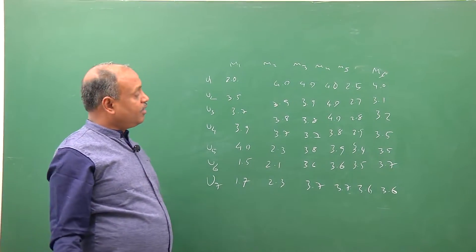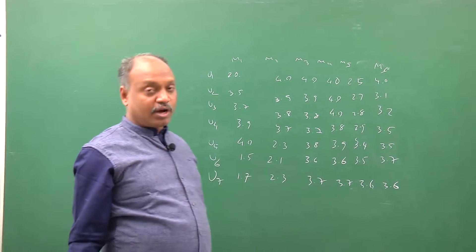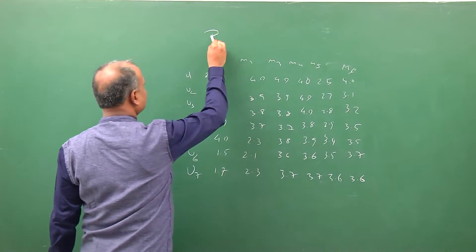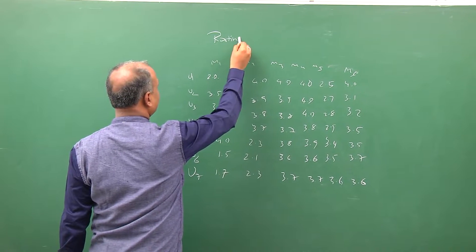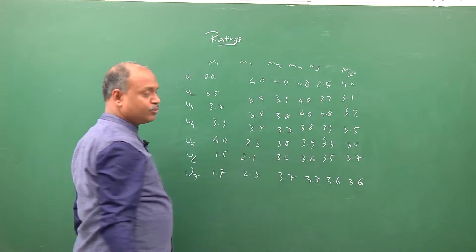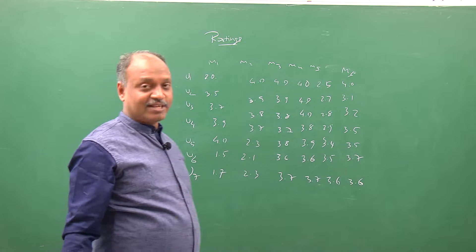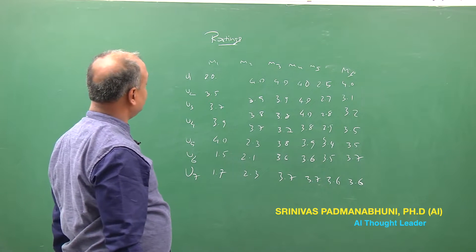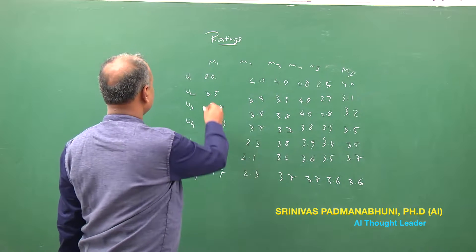Very often in recommending systems, we are faced with a scenario where we are given ratings by users for different objects like movies, and we have to understand how to use the ratings for potential future recommendations for a new user.